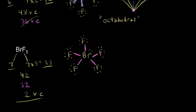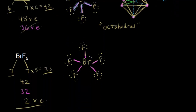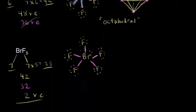After drawing the dot structure, we count the number of electron clouds surrounding our central atom and predict their geometry. Looking at our central bromine, we have 5 sets of bonding electrons — each a region of electron density — plus the lone pair, which is also a region of electron density. So we have 6 electron clouds. With 6 electron clouds, they want to point toward the corners of a regular octahedron, giving us an octahedral geometry for the electron clouds.